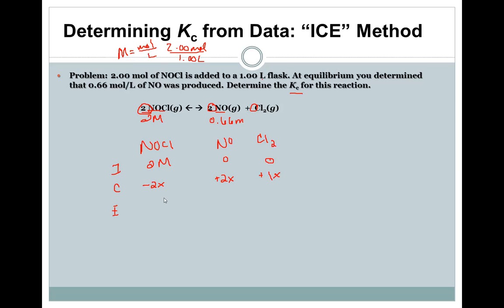And then NOCl, and once again because of this two here it's going to be squared. These are the concentrations at equilibrium, so we're just basically going to plug those numbers in.